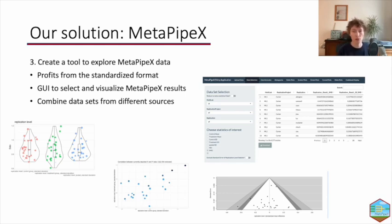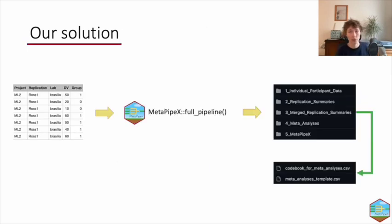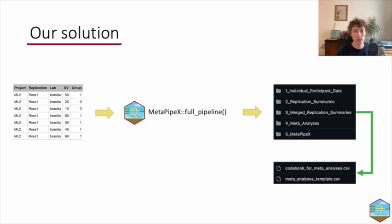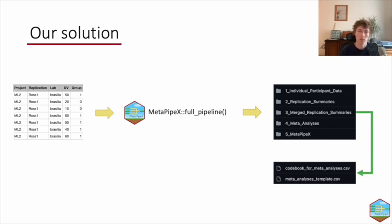The most convenient way to apply the pipeline is the full pipeline function, which takes individual participant data as input and runs the analysis, creating full documentation of the standardized pipeline. The exported structure includes a nested list in R, and with each folder you always have the data file and corresponding code books so you can make sense of the columns in the dataset.